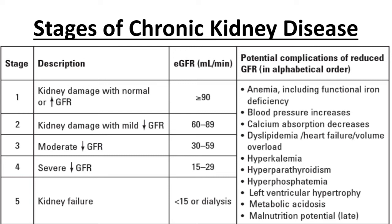Hyperkalemia is one condition for which dialysis must be started, as it has devastating effects on the myocardium and can lead to stoppage of the heart in diastole. Hyperparathyroidism results from decreased calcium, causing increased parathormone secretion, which affects bones, releases calcium and phosphate — leading to hyperphosphatemia. There will be left ventricular hypertrophy due to hypertension, metabolic acidosis because the renal buffer system is not working, and these patients are also at risk of malnutrition.